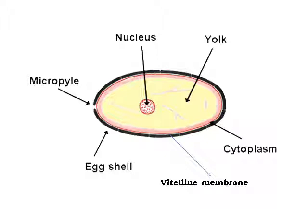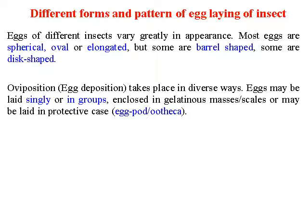This is the structure of the egg as described: the center is the nucleus, surrounded by yolk, cytoplasm, the vitelline membrane, the egg shell, and there is a small opening at one side which is the micropyle. This is the typical structure of the insect egg.